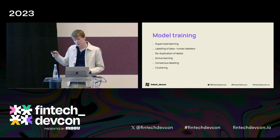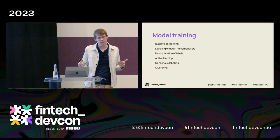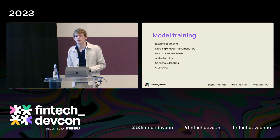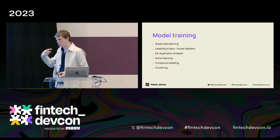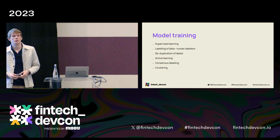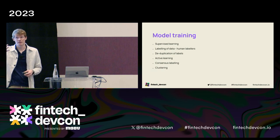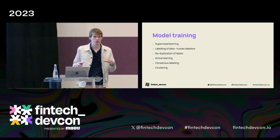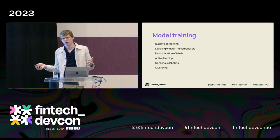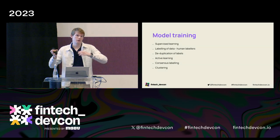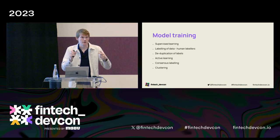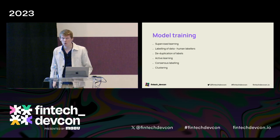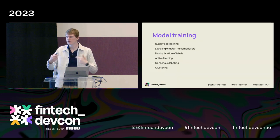The final point is clustering. We use this in consensus labeling but also independently. Are there similar transactions that have been labeled differently? For example, do we have 80 Uber transactions but five labeled differently? Why? It may be there's a feature we're missing that makes those five different. A good example in the UK: many supermarkets have gas stations. Tesco and Tesco Petrol are different categories. You'll have fewer Tesco Petrol transactions. You want to understand: are they different for a reason, or because of lower-quality labels?